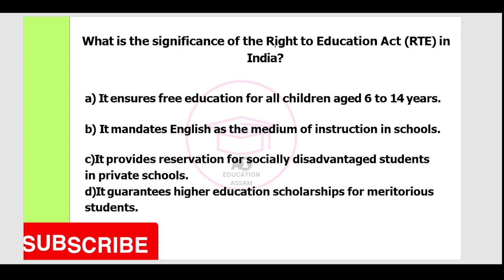Next question. What is the significance of the Right to Education Act in India? Option A: it ensures free education for all children aged 6 to 14 years. Option B: it mandates English as the medium of instruction. Option C: it provides reservation for socially disadvantaged students in private schools. Option D: it guarantees higher education scholarships for meritorious students. The correct answer is Option A — it ensures free education for all children aged 6 to 14 years.